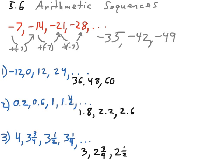Here are your answers. I'm sorry, I had a small typo there in problem 2. That last term should have been a 1.4. Hopefully, you caught that. The sequences for number 1, it's adding 12 each time. So, we go to 36, 48, and 60. Number 2 was adding 4 tenths each time. So, we go to 1 and 8 tenths, 2 and 2 tenths, 2 and 6 tenths. And for number 3, we are subtracting 1 quarter each time. So, we move to 3, 2 and 3 quarters, 2 and 1 half.